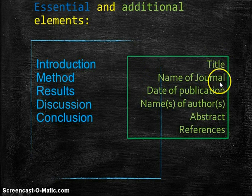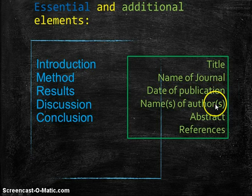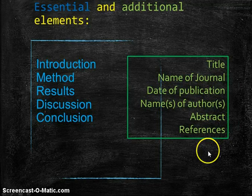Let's take a look. We've got our title, the name of the journal, the date of publication, the name of the authors, the abstract, and the references. And now we're going to take a closer look at each of these elements.